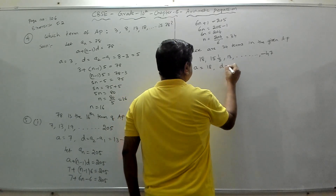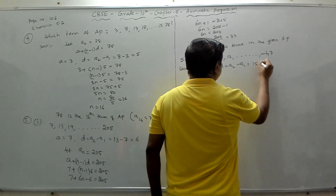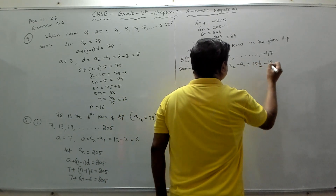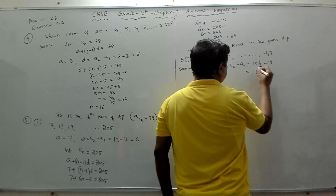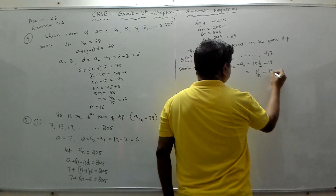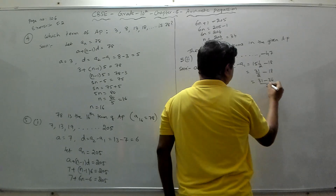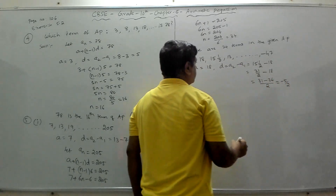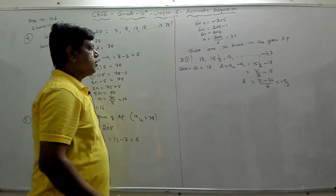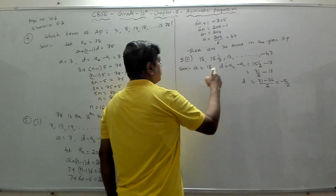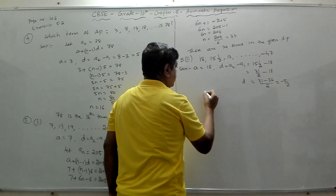Converting 15½ to an improper fraction: 31/2. So d = 31/2 − 18 = (31 − 36)/2 = −5/2. The common difference d = −5/2.